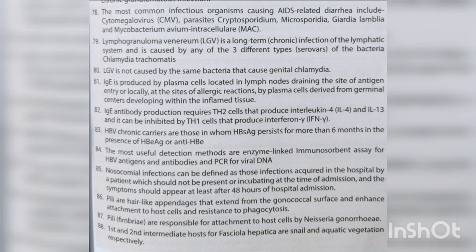Pili are hair-like appendages extending from the gonococcal surface, enhancing attachment to host cells and resistance to phagocytosis; pili are responsible for attachment to host cells by Neisseria gonorrhoeae. First and second intermediate hosts for Fasciola hepatica are snail and aquatic vegetation respectively.